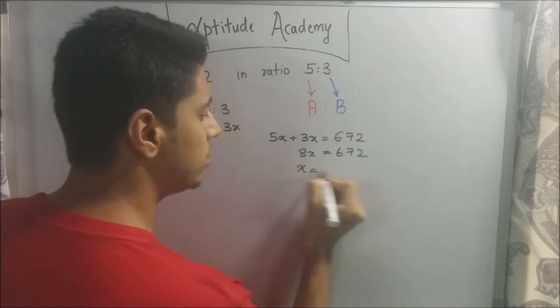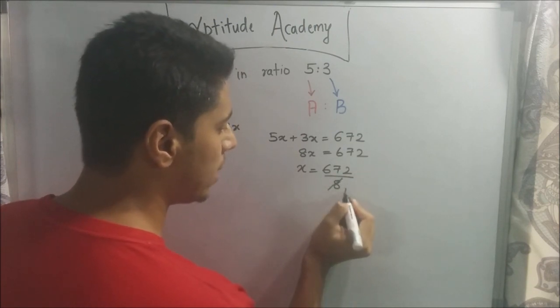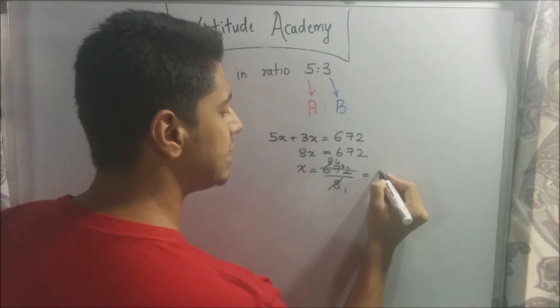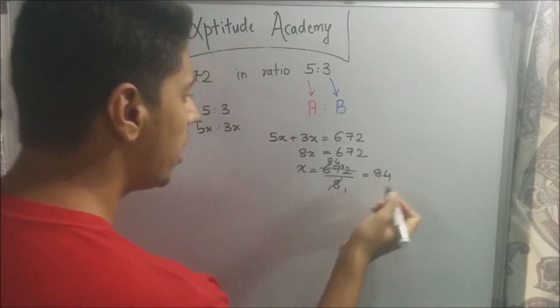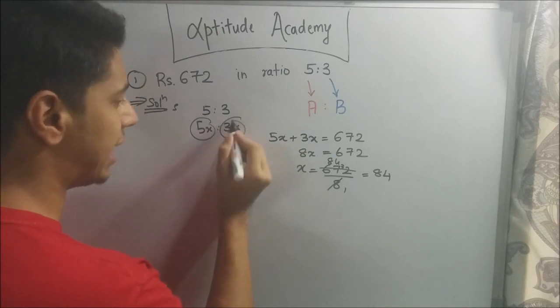So, x is equal to 672 by 8. 8 ones are 8, 8 twos are 16, 8 eights are 64... So, x is equal to 84. Now, we know that A's part is 5x and B's part is 3x.